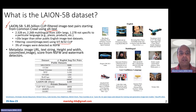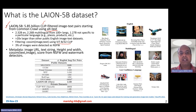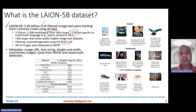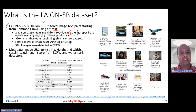Amongst these 5.85 billion image-text pairs, 2.32 billion are English, 2.26 billion are multilingual covering about 100 plus languages, and the remaining 1.27 billion are not specific to a particular language — things like places, product names, etc. are not really language-specific, so that is what this 1.27 billion set represents.